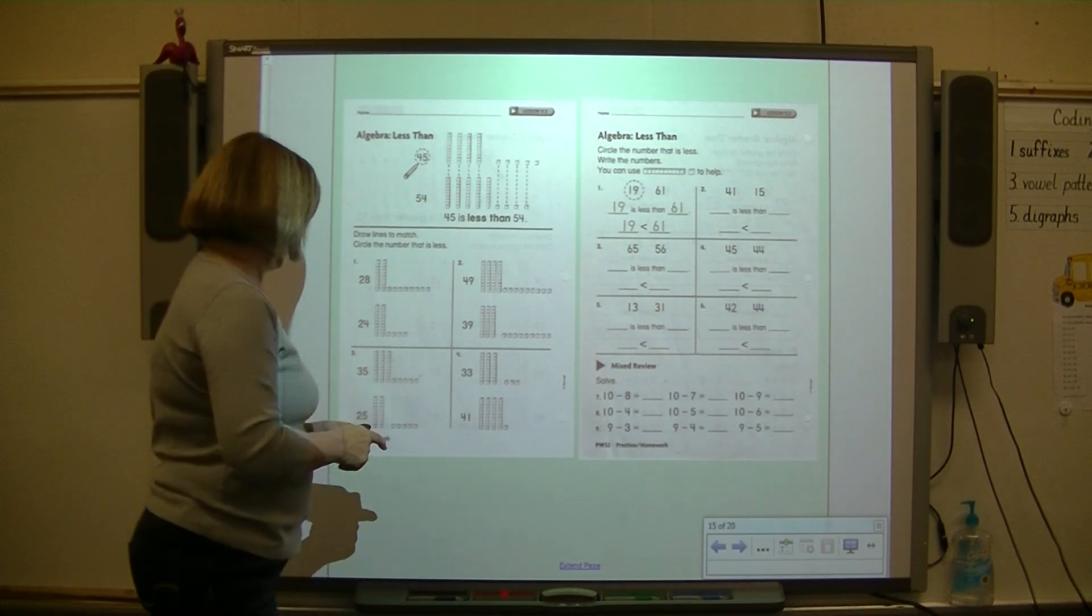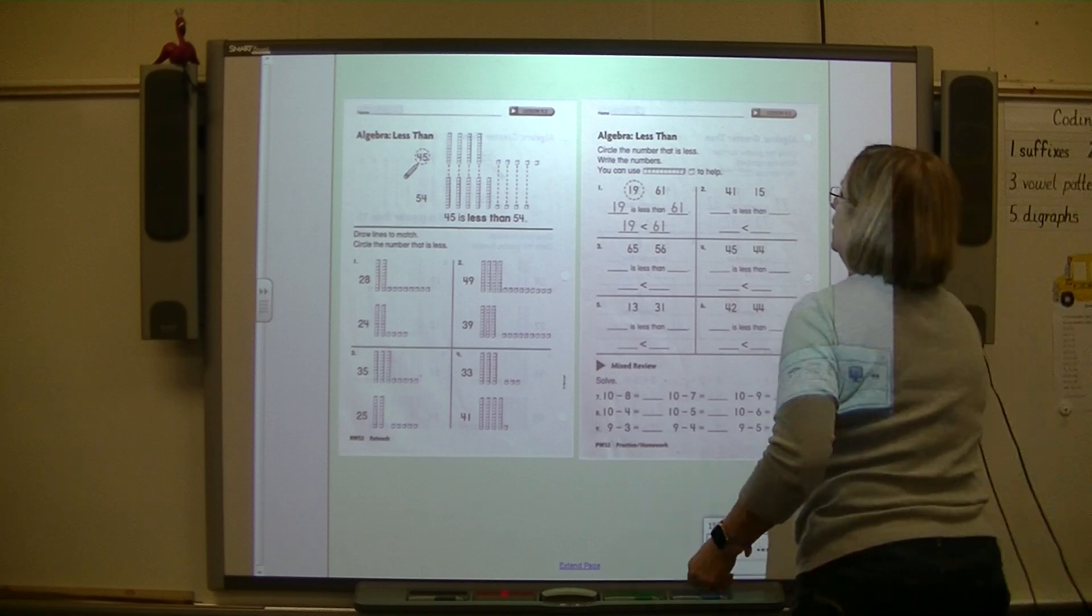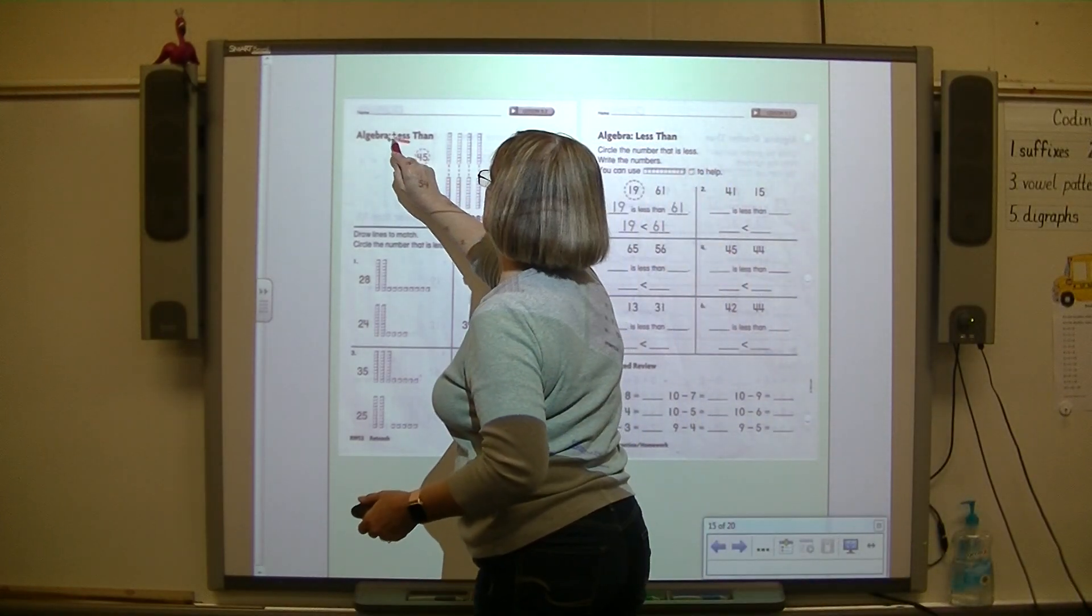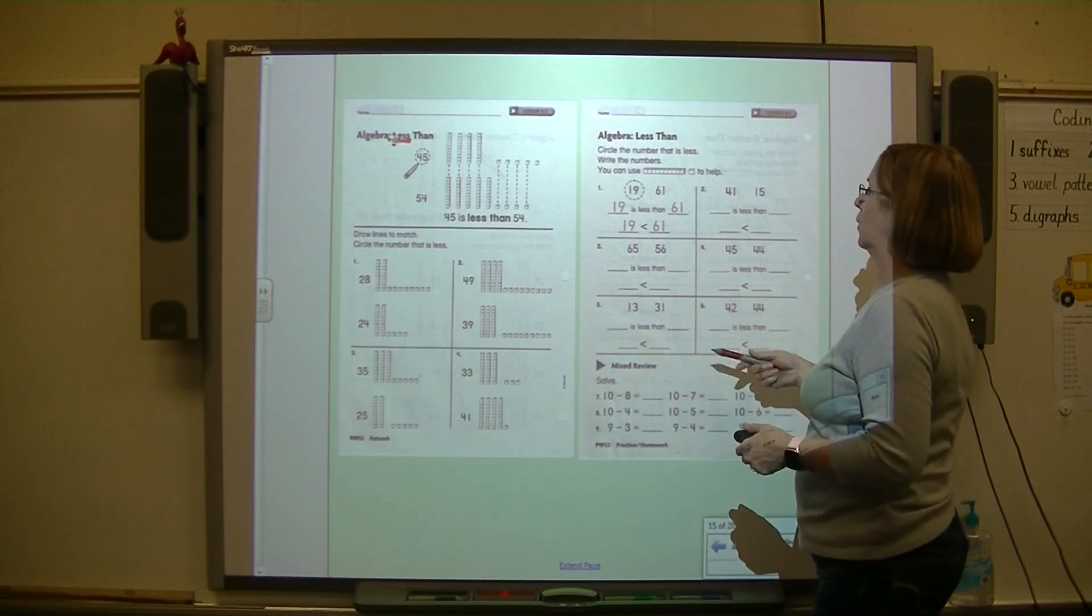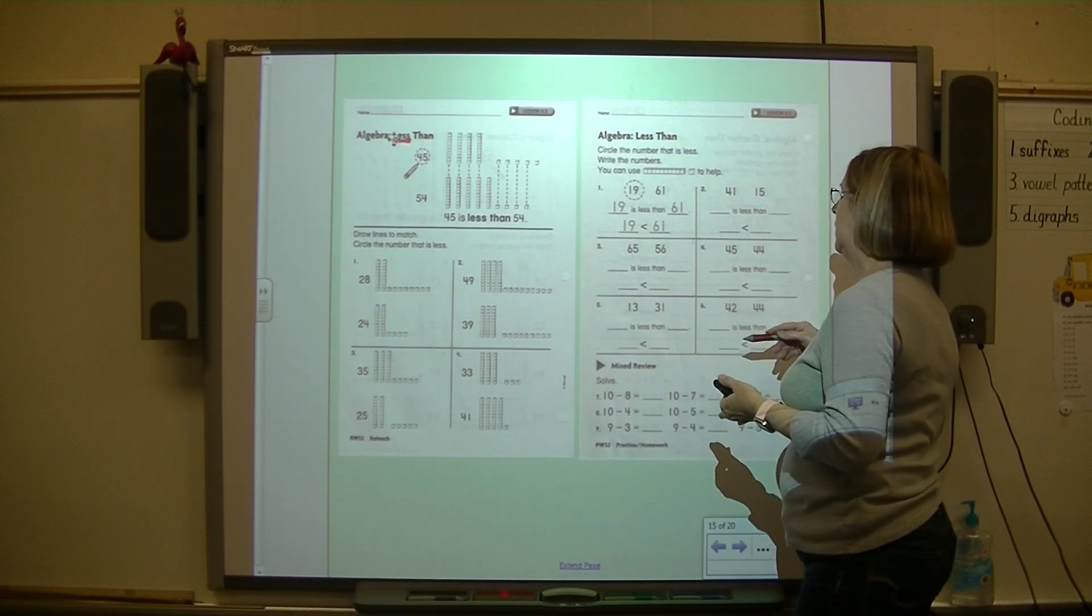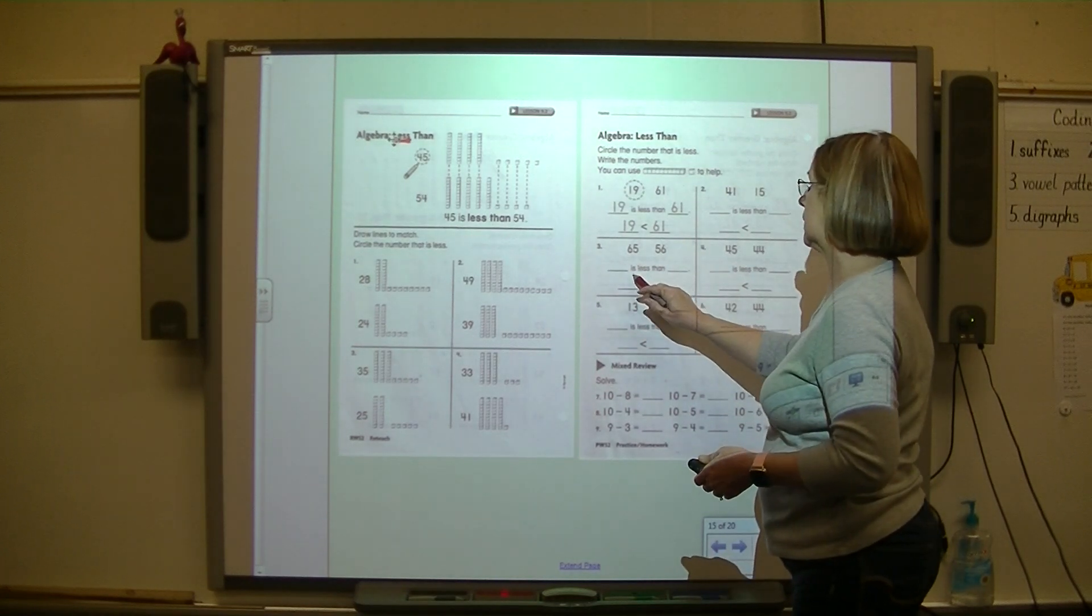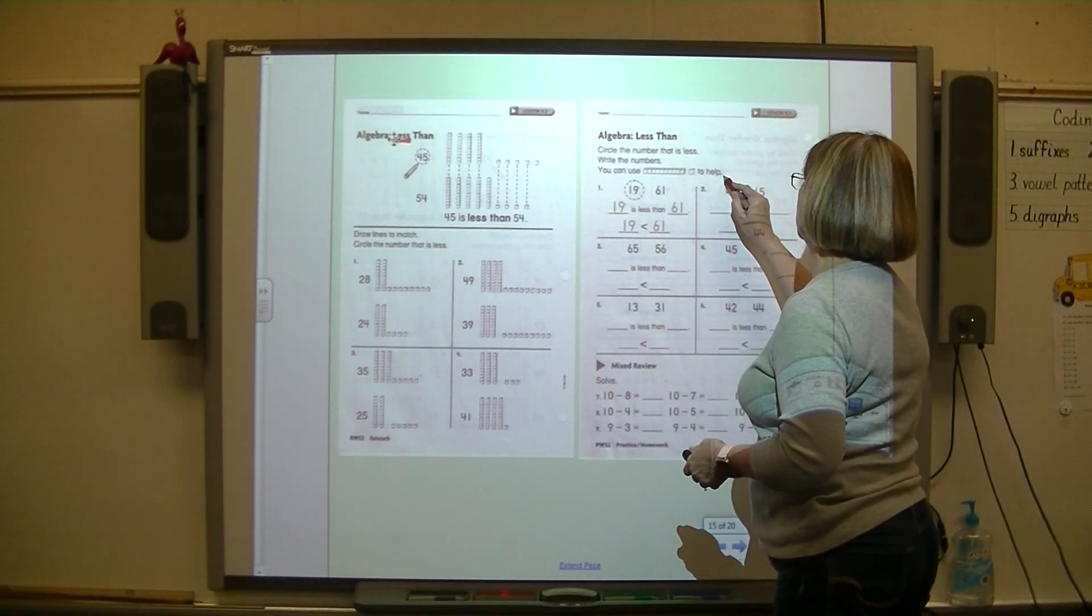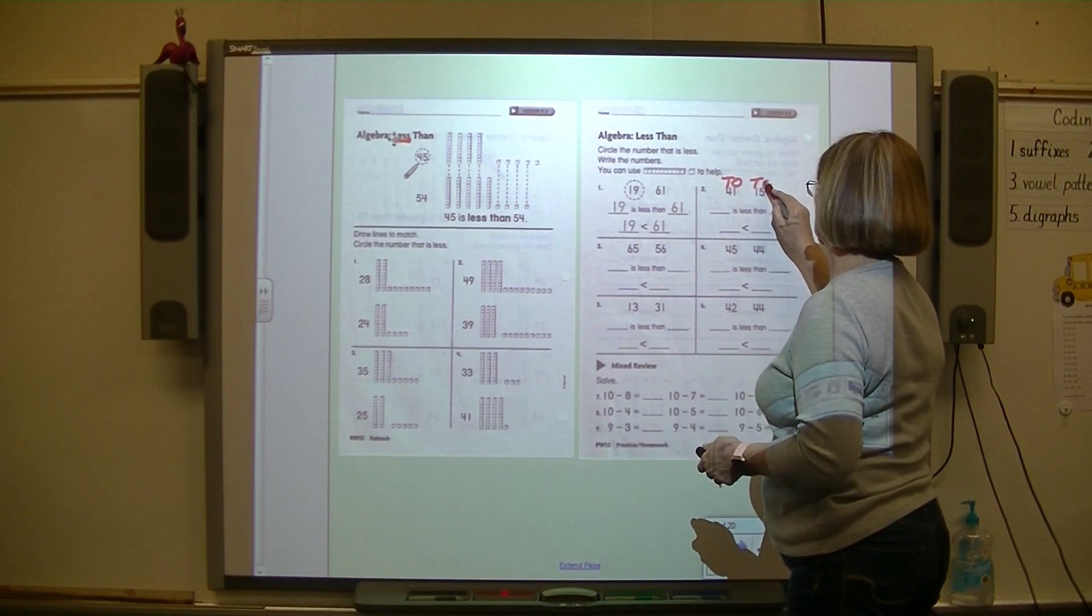...number that is less. What happened to my marker? You're worrying about the number that is less this time, okay? Over here, you're going to choose the number that is less, and the number that is less comes first because it says 'is less than.' Now I want you to write T O over each number and then look...